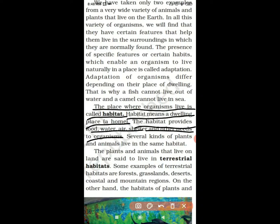The plants and animals that live on land are said to live in terrestrial habitats. Organisms which live on land are called terrestrial. Examples of terrestrial habitats are forests, deserts, coastal regions, and mountain regions.